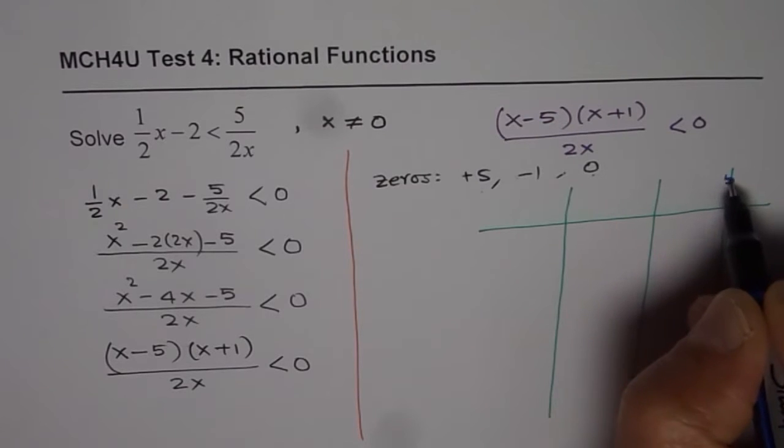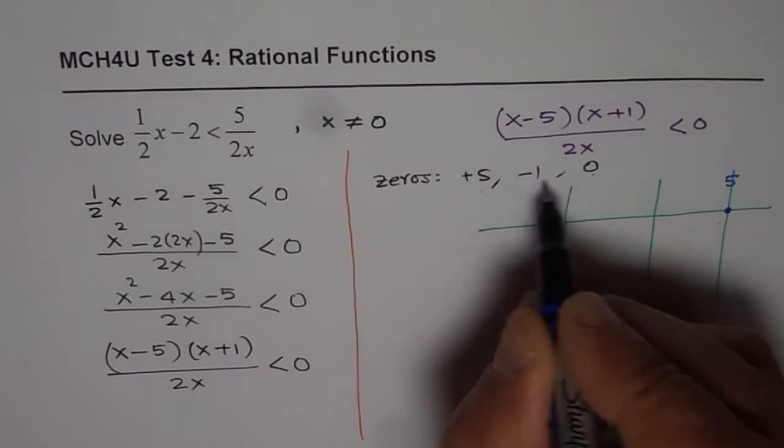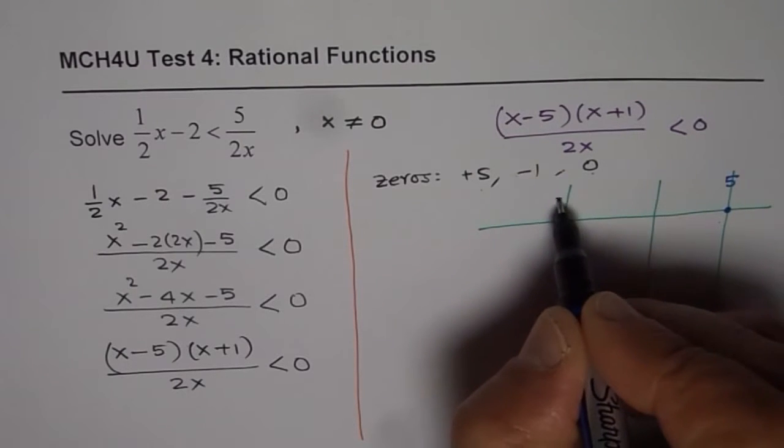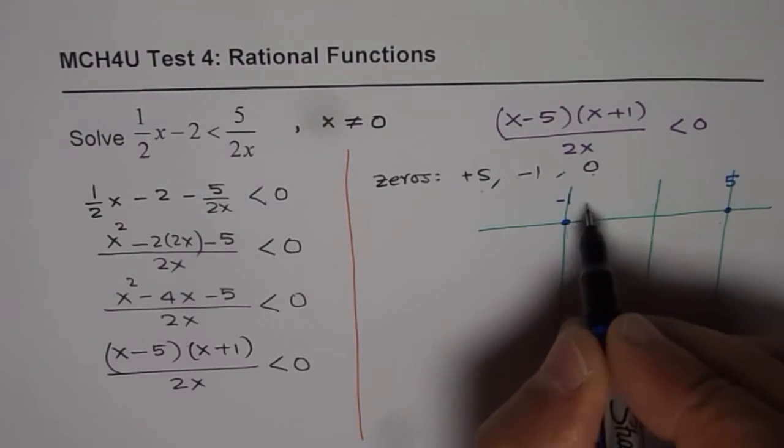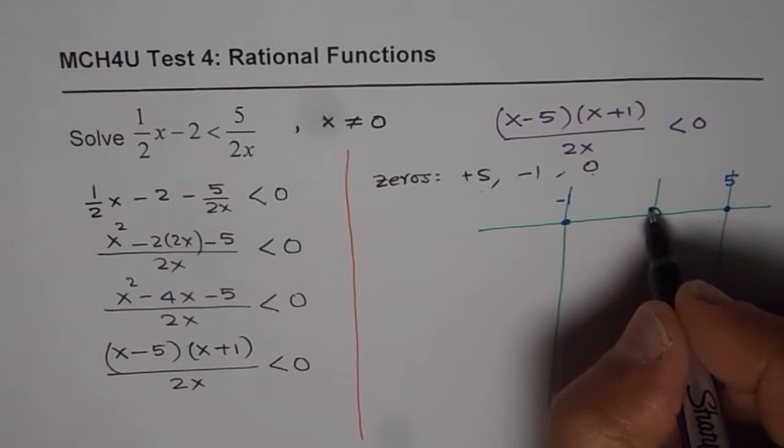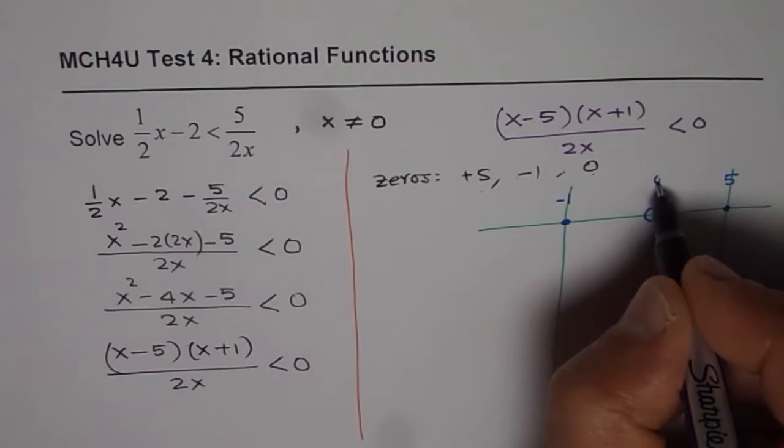Zeros at 5, so this is at 5 and then we have at minus 1, which I am putting as a solid dot, minus 1. It is not a restriction but the vertical asymptote at 0 is a restriction. So, I put it like a hole here which is at 0.